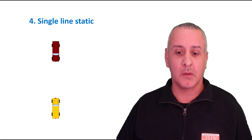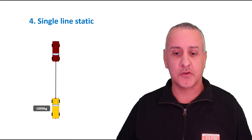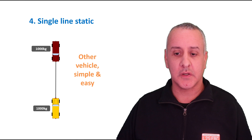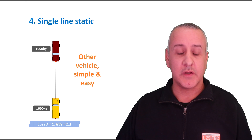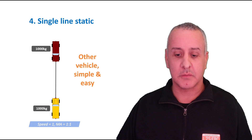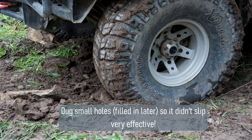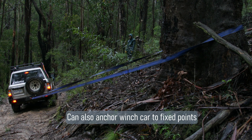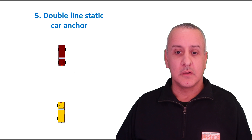Now we come to a single line static pull. There's a stuck vehicle, but this time a different vehicle is doing the winching. We run the winch line out — again, a thousand kilograms of force required to move, a thousand generated on the winch vehicle — simple and easy. Speed is one-to-one: one metre of winch line taken in, vehicle moves a metre, mechanical advantage one-to-one. When winching facing downhill you often need to secure your car — one easy way is to dig small holes for the front wheels and fill them in afterwards, or attach the back of your winch car to a tree with an anchor point.